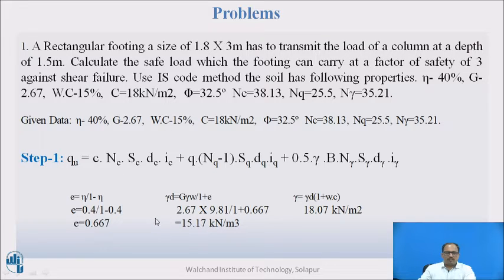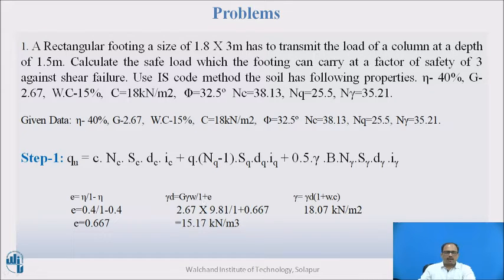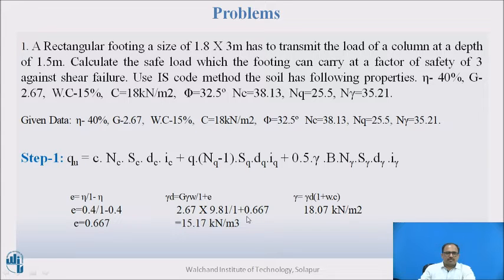To calculate the unit weight of soil γ, use the formula: γ = γd × (1 + w). The dry unit weight γd is unknown, so calculate it as γd = G·γw / (1 + e). The void ratio e is also unknown; calculate it as e = n / (1 − n), where n is porosity. Substituting n = 0.40 gives e = 0.667. Then γd = (2.67 × 9.81) / (1 + 0.667).